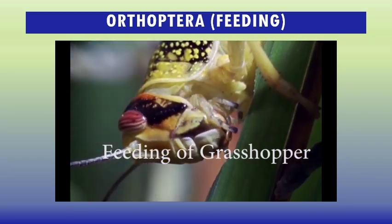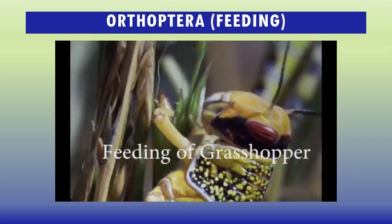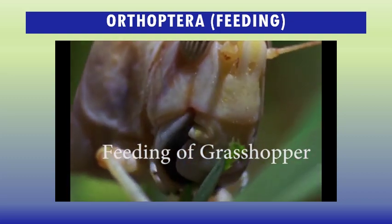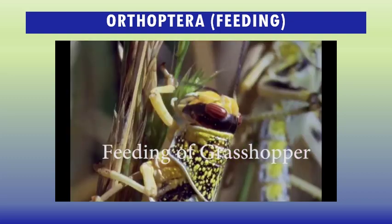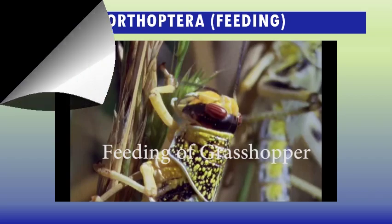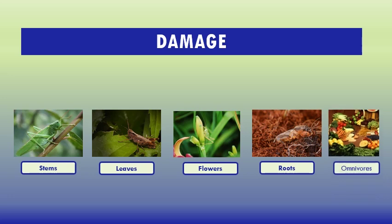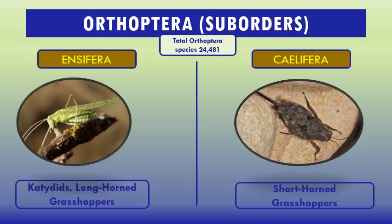Orthoptera have biting-chewing mouthparts and cause damage by biting off pieces of leaves, stems, flowers, and roots. Most damage caused by Orthoptera is through direct consumption of the plant, not by vectoring diseases. Damage is often easily visible. Zhang described the Orthoptera species total number as 24,481.